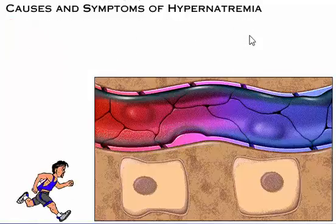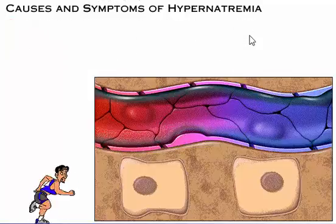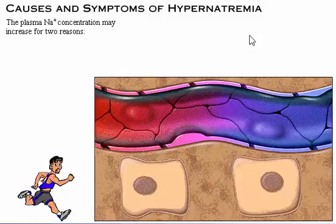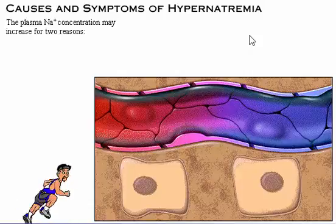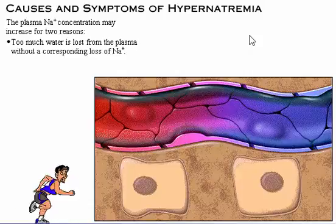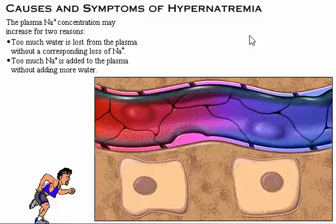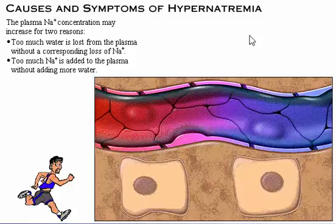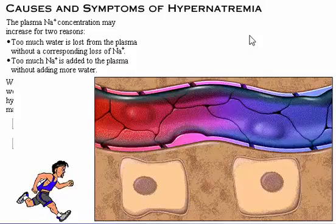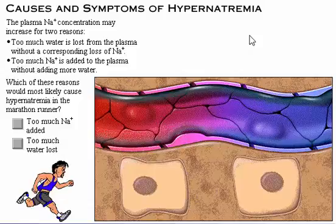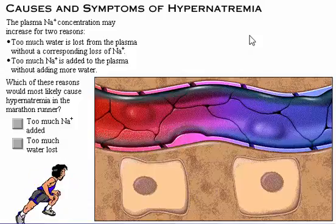Let's use the marathon runner to see the effect of hypernatremia on the body. The plasma sodium concentration may increase for two reasons: too much water is lost from the blood without a corresponding loss of sodium, or too much sodium is added to the blood without adding more water. Which of these reasons would most likely cause hypernatremia in the marathon runner?